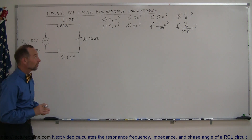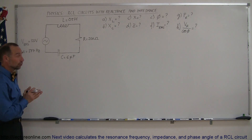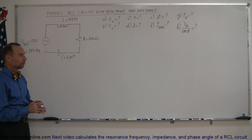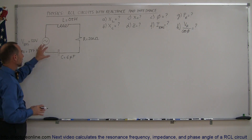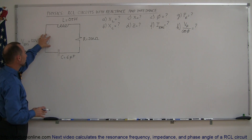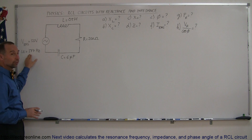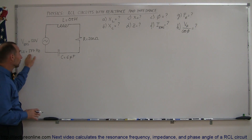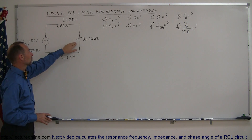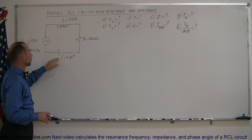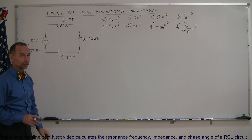Here's a really interesting example of how you work with RCL circuits. RCL circuits are circuits that have a varying voltage source — it varies according to a certain frequency, this is the radial frequency. We have an inductor, a resistor, and a capacitor all in series in the same circuit.